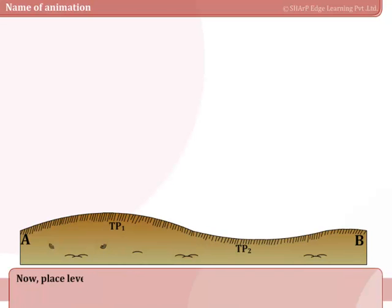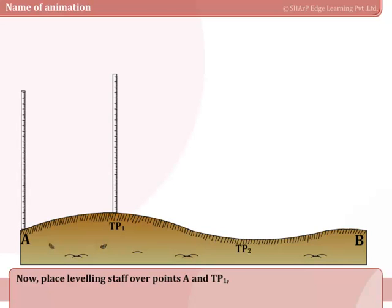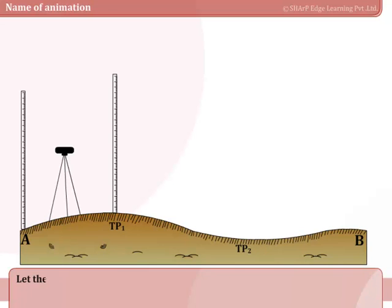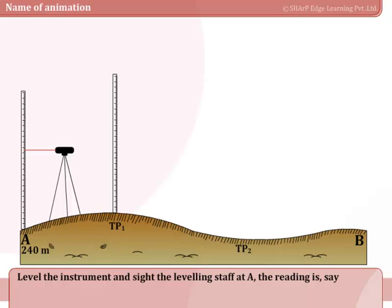Now place leveling staff over points A and TP1 and set the instrument between points A and TP1. Let the reference level of point A be, say, 240 meters. Level the instrument and sight the leveling staff at A. The reading is, say, 2.024 meters.